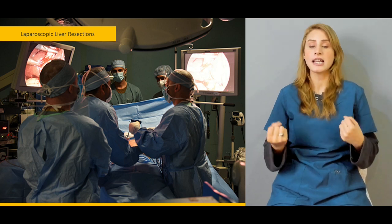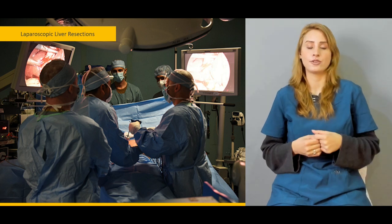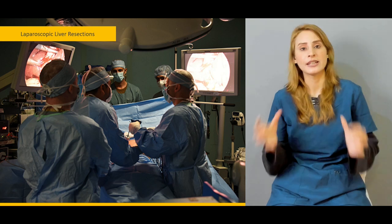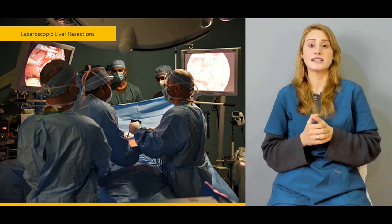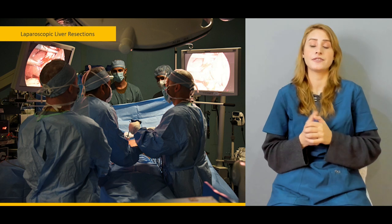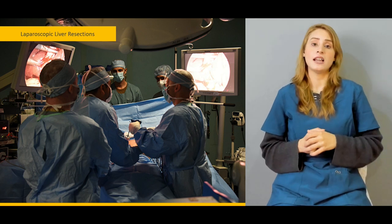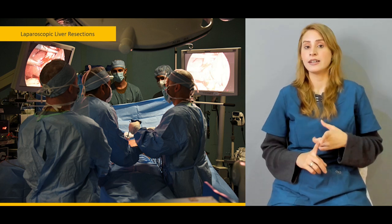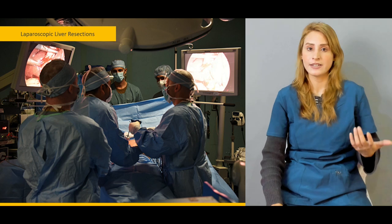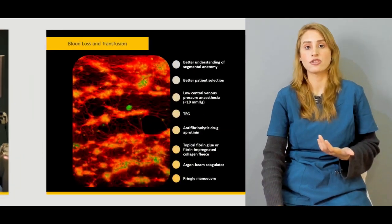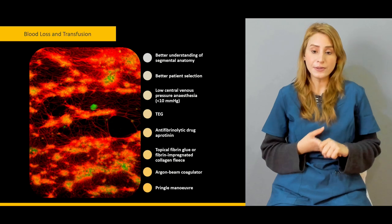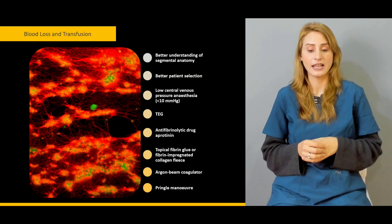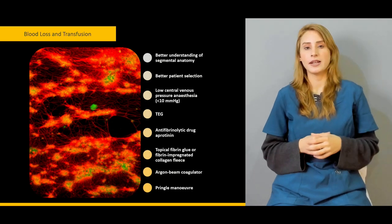We'll be talking about the prerequisites for liver resections, especially controlling the CVP pressures and the help of the anesthesiologist for restriction of fluids and for the use of venodilators, and special techniques like argon beam coagulators and antifibrinolytic drugs. Then we'll be talking about the use of topical fibrin glue and collagen-impregnated collagen fleece.